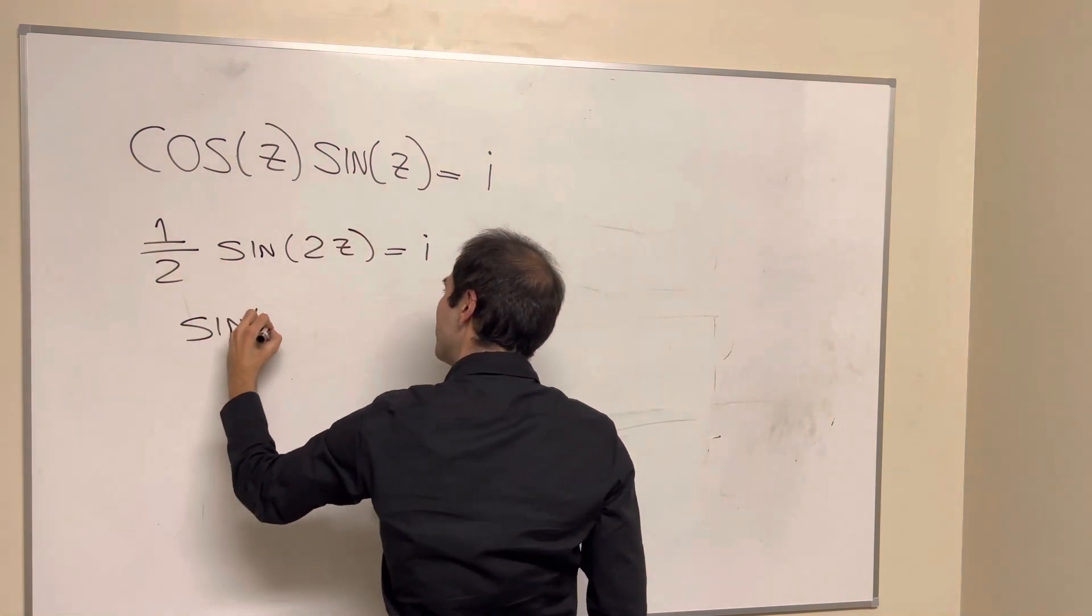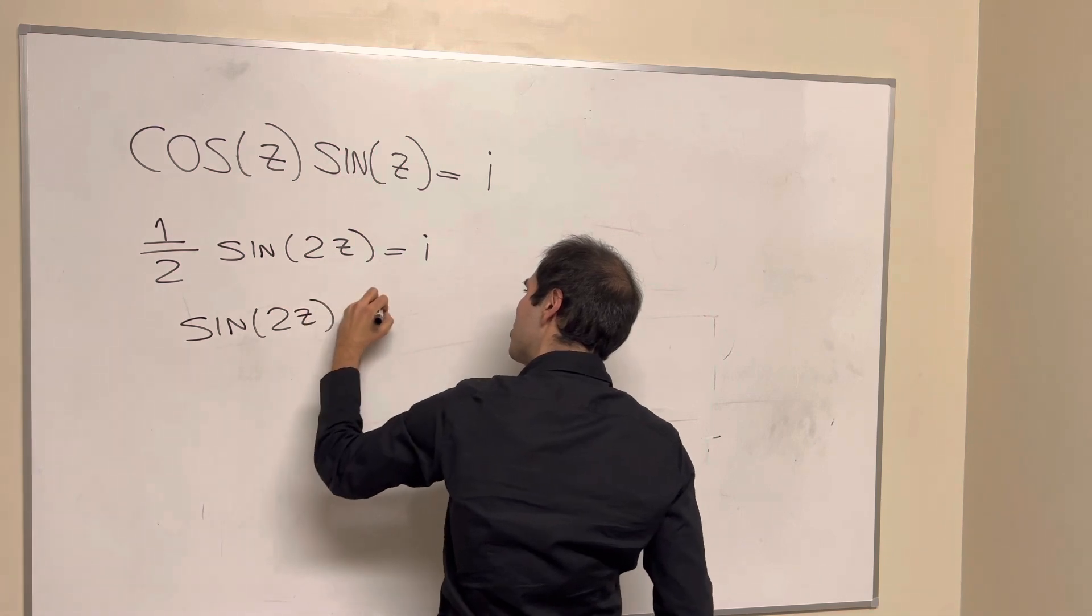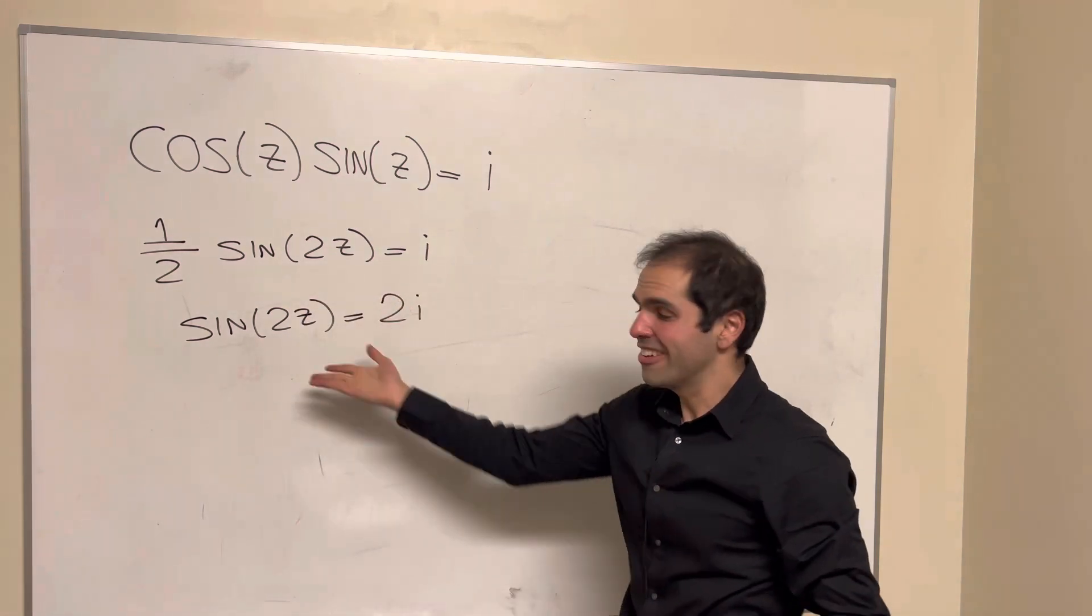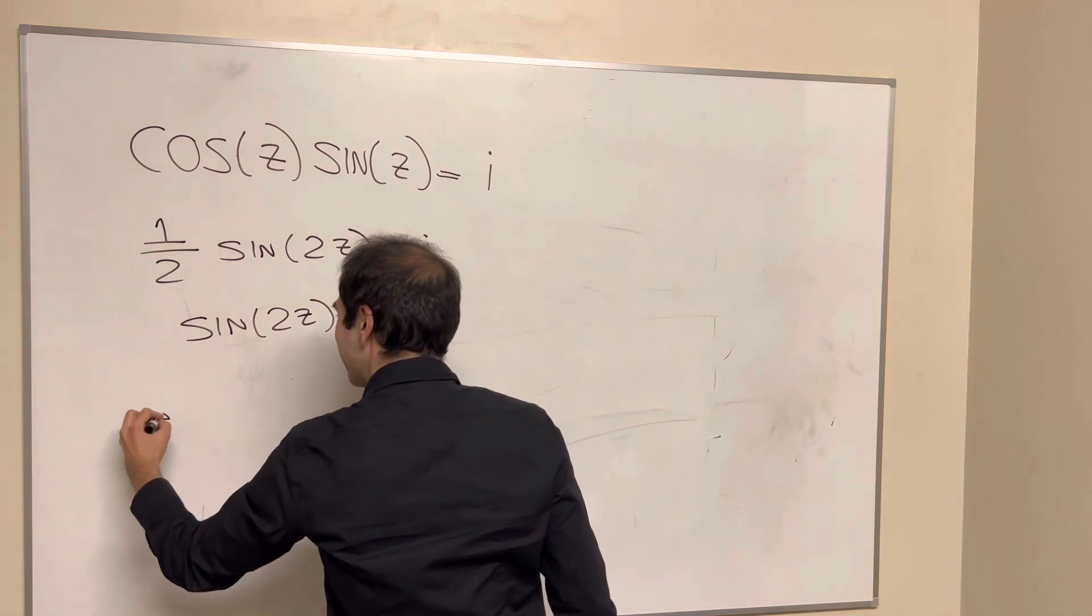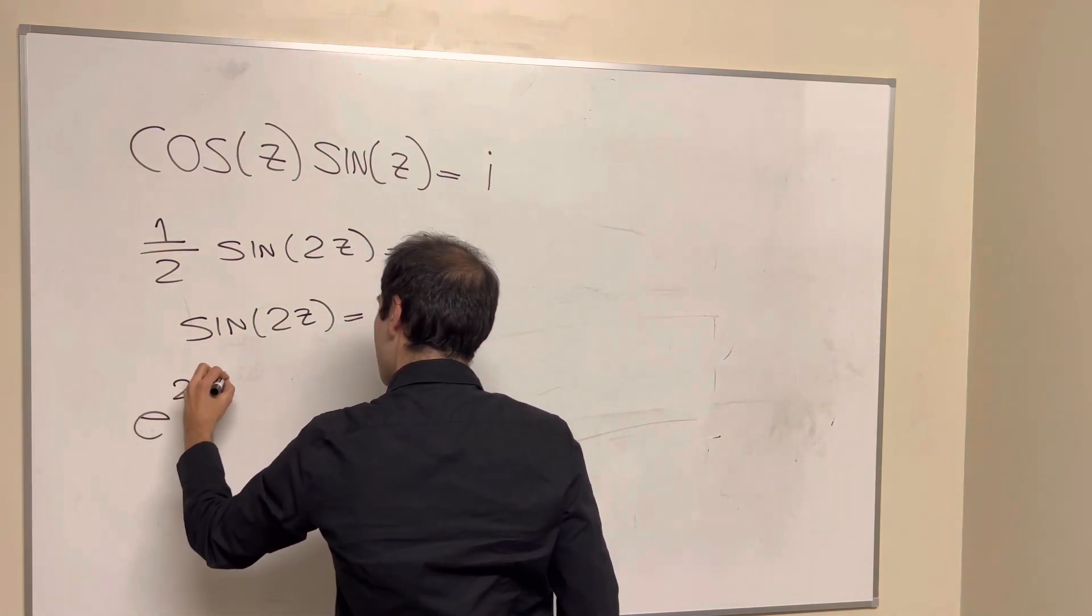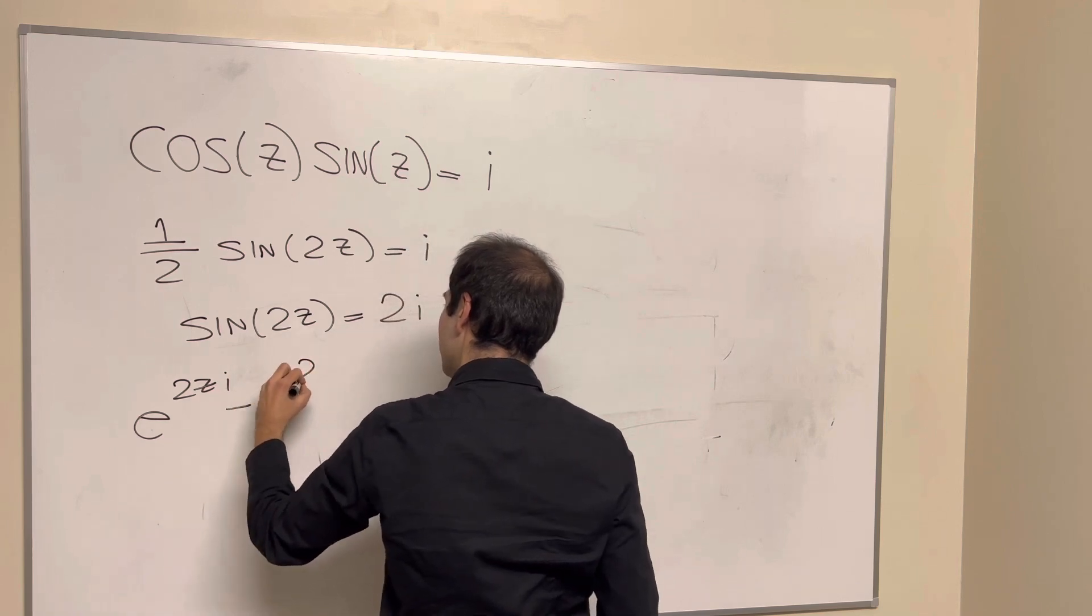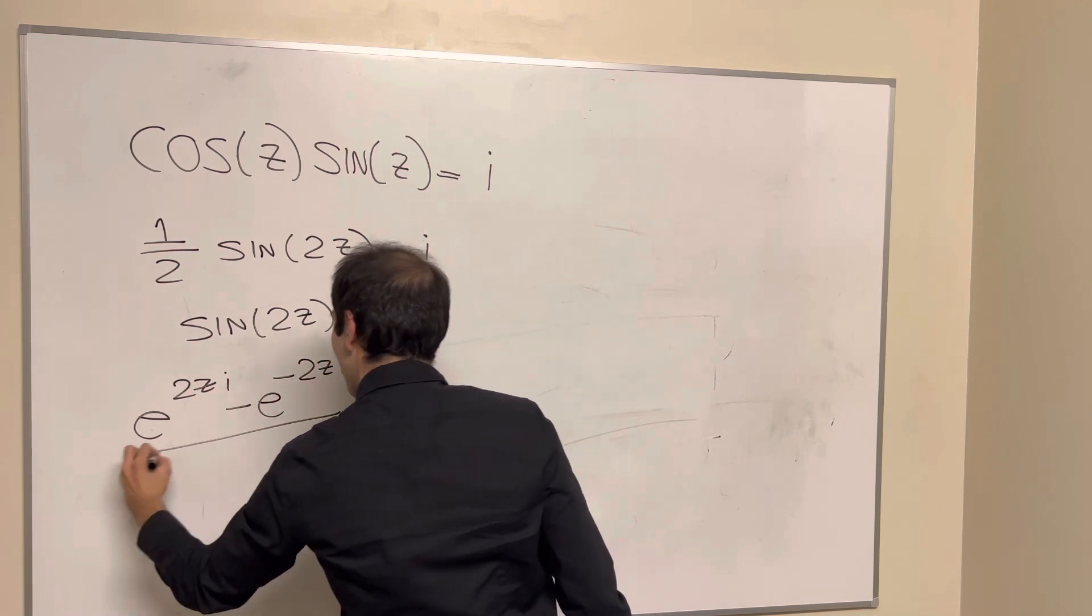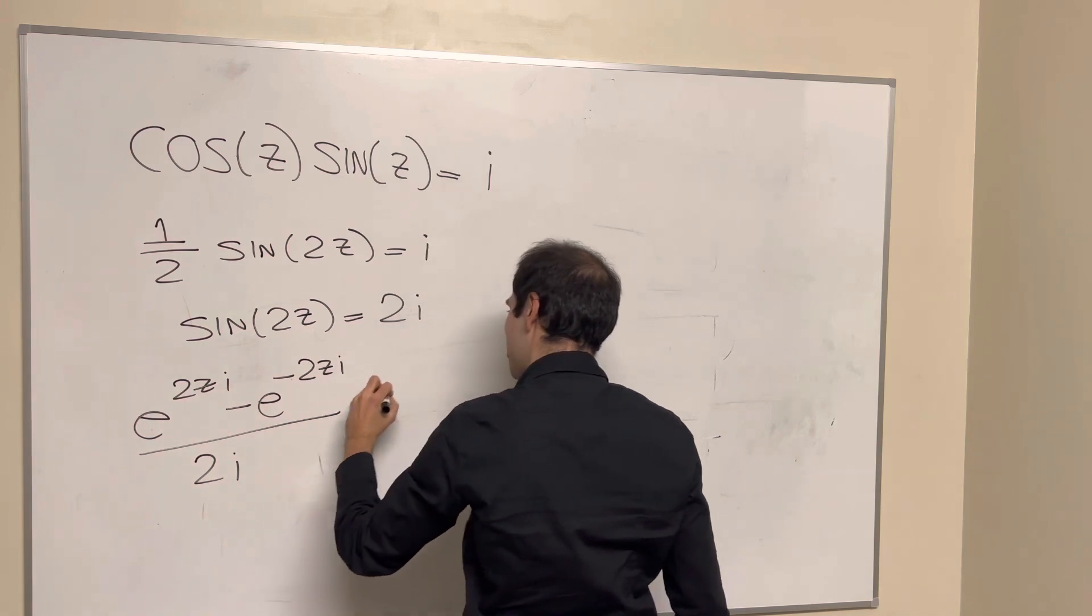So sine of 2z equals 2i. And of course, let's go into the complex world. So this is just e to the 2zi minus e to the minus 2zi over 2i equals 2i.